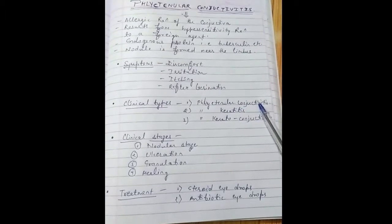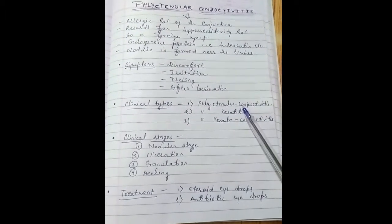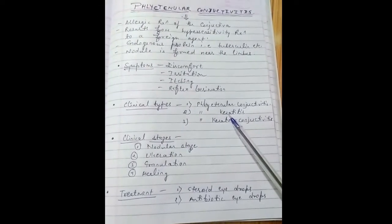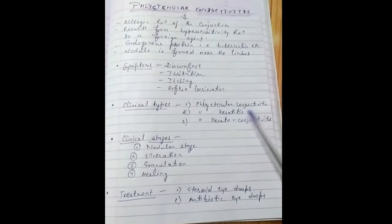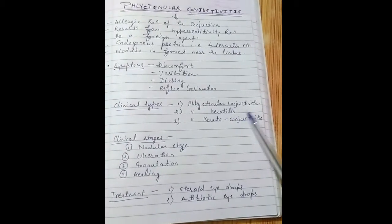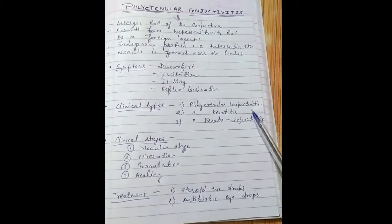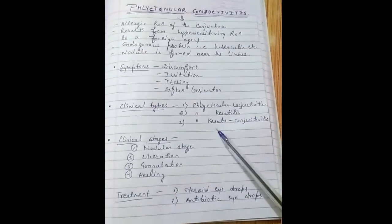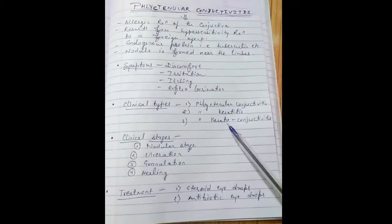First is phlyctenular conjunctivitis - in this only conjunctiva is involved and this is the most common type. Second is phlyctenular keratoconjunctivitis - this is the most rare.